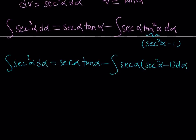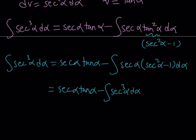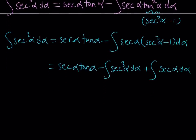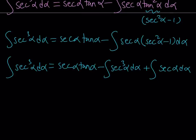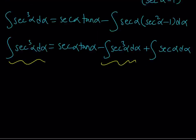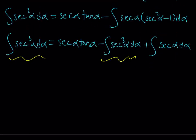When we distribute, we get secant alpha times secant squared alpha d alpha — which is secant cubed alpha — and then, due to the double negation, a positive term: the integral of secant alpha d alpha. Notice that the integral of secant cubed alpha appeared again on the right side with a coefficient of negative one. So we add the secant cubed terms from both sides, giving us two times the integral of secant cubed alpha d alpha equals secant alpha tangent alpha plus the integral of secant alpha d alpha.